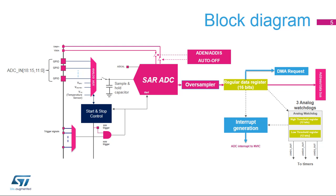Three analog watchdogs monitor the voltage of selected analog inputs with regard to high and low thresholds. When the voltage is not within the guard range, an interrupt may be generated and a trigger event may be signalled to the timer units. Note that the analog front end can be power-gated when the ADC is not used, and also between acquisitions by using the auto-off function.